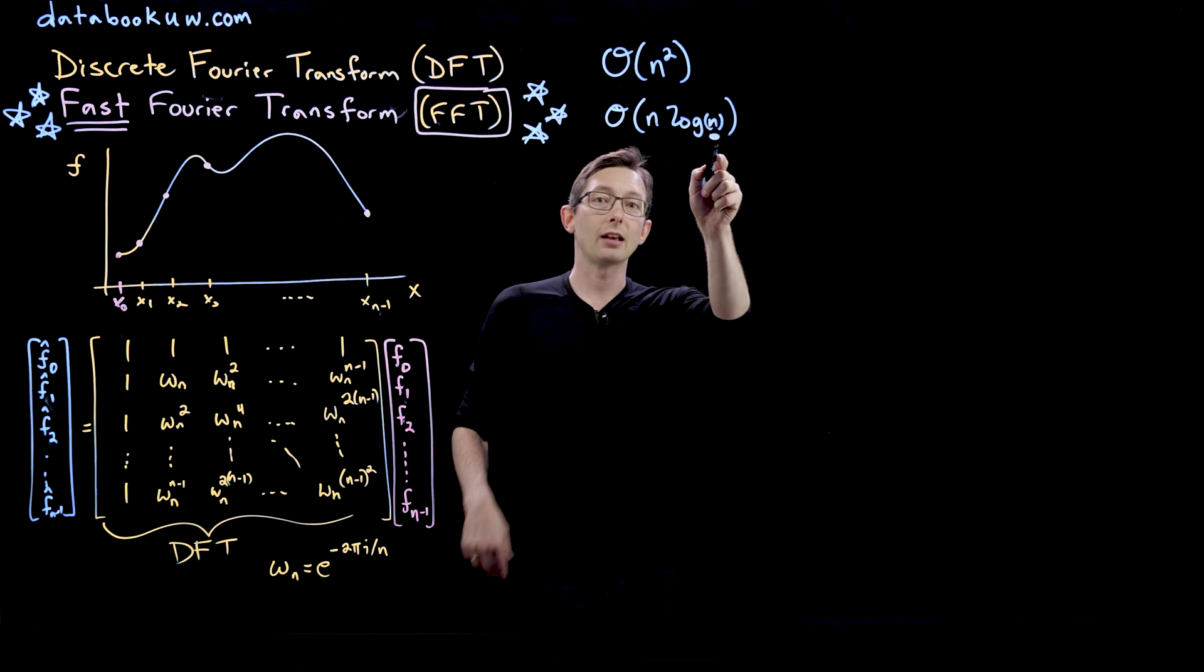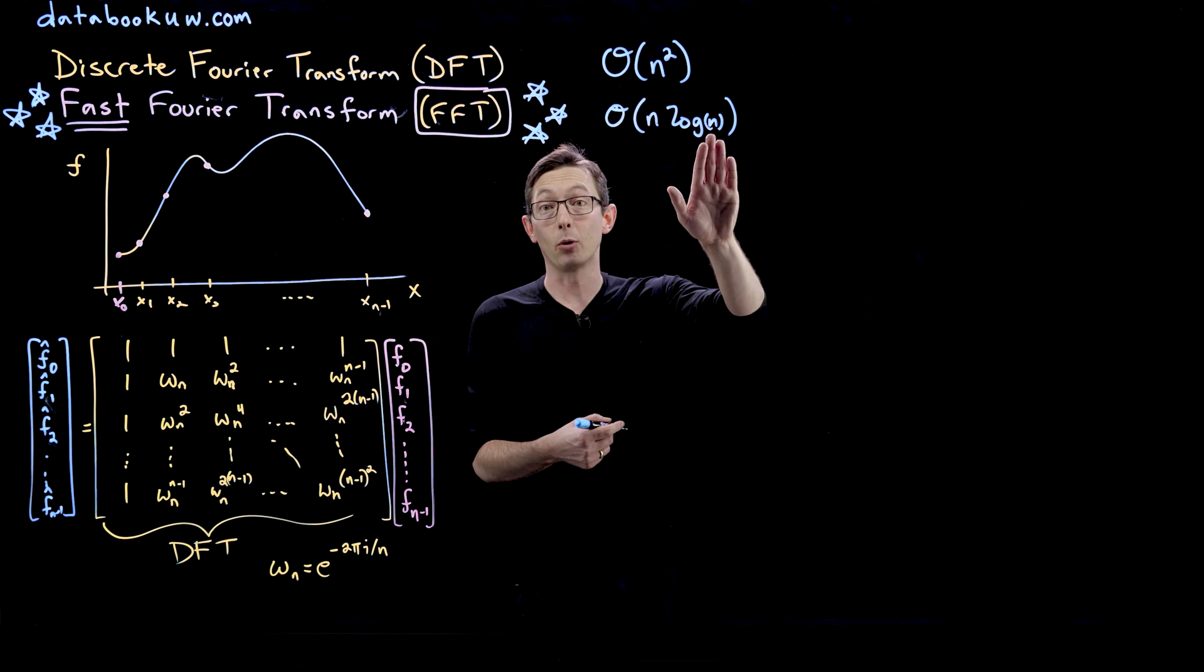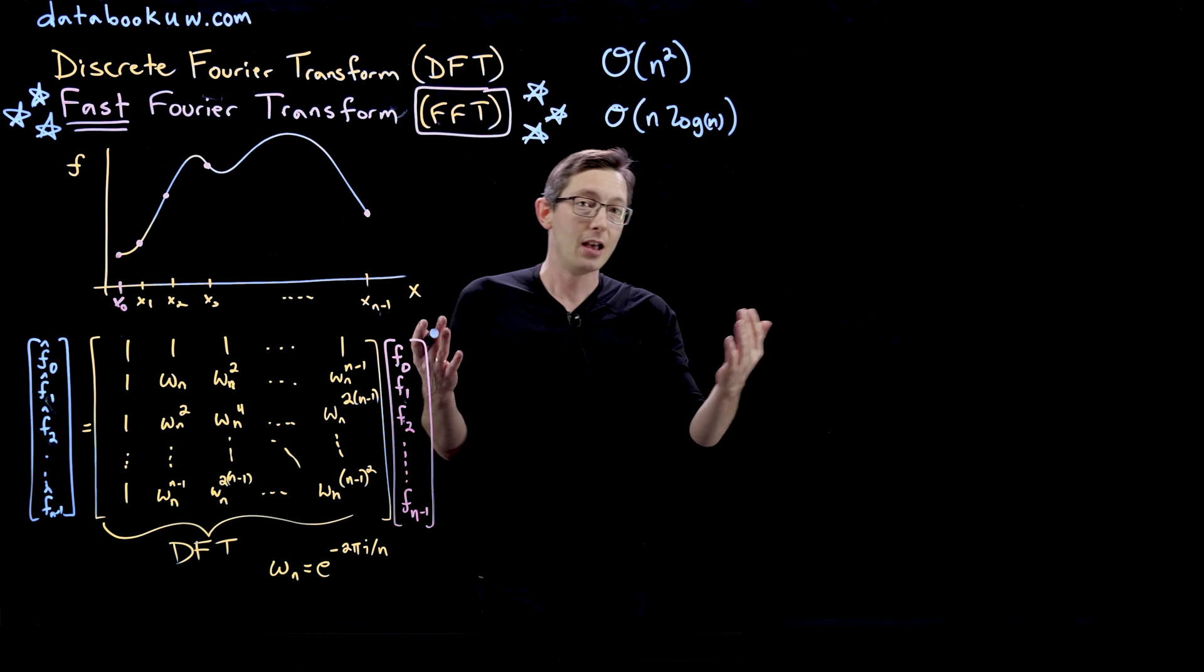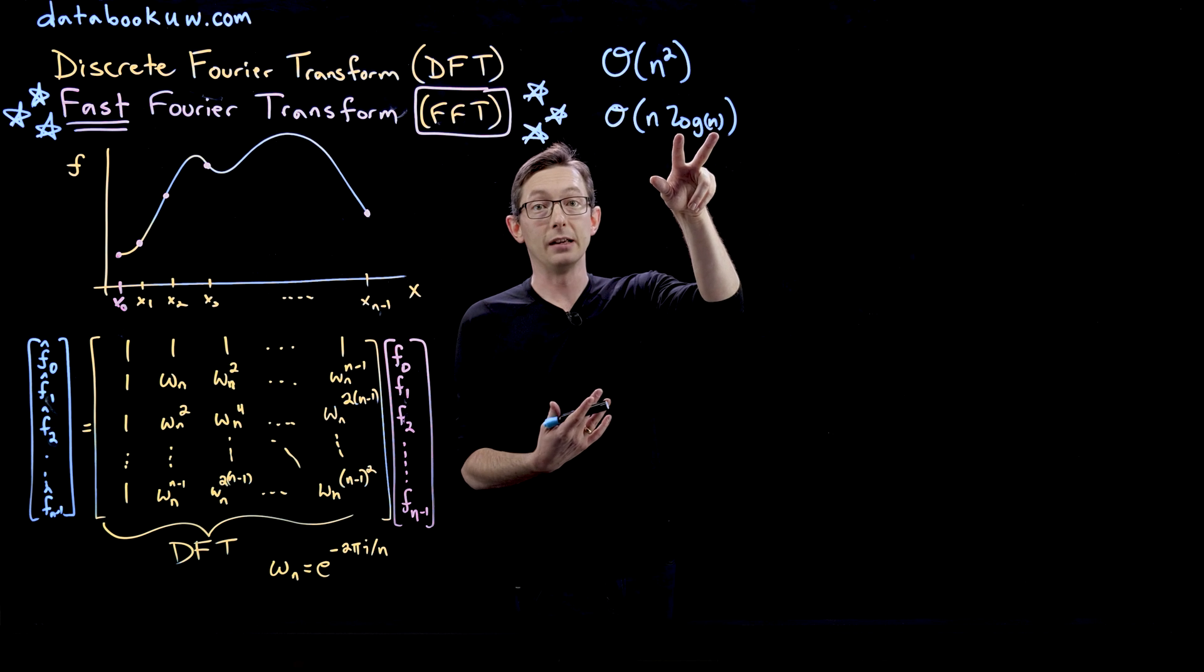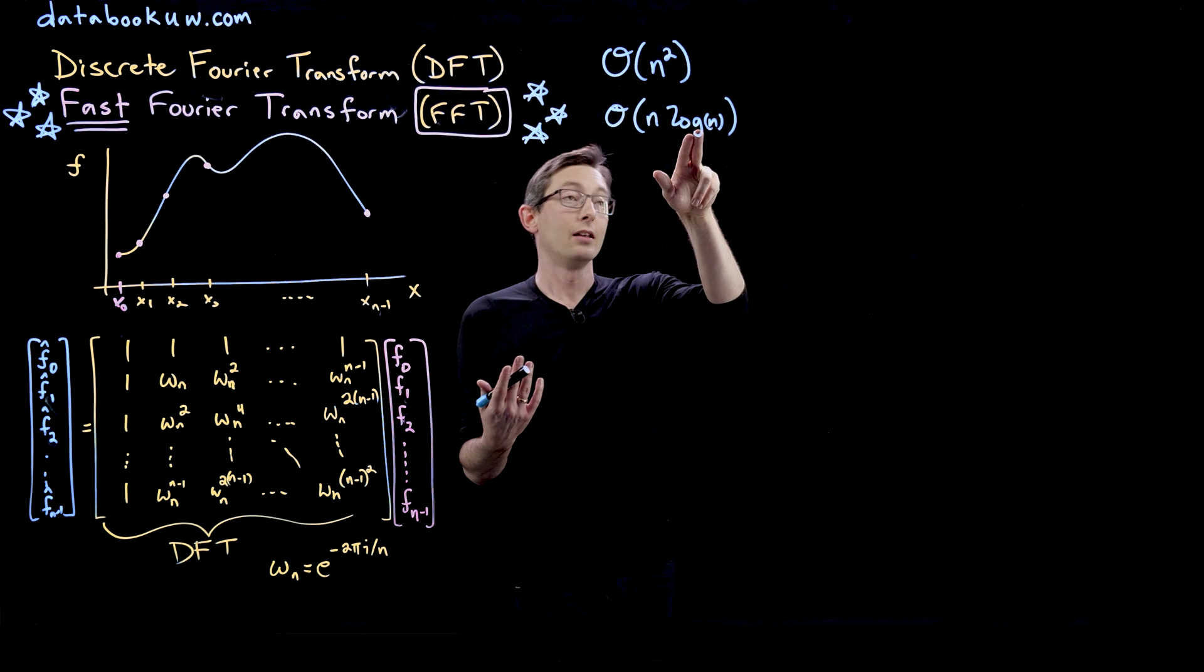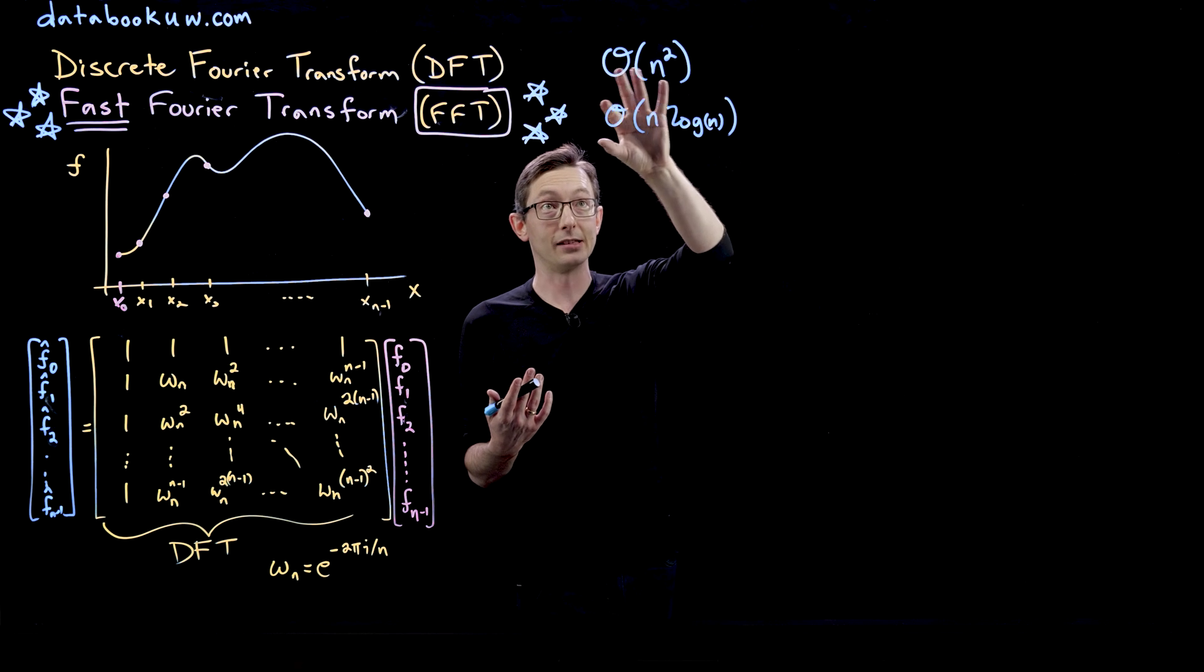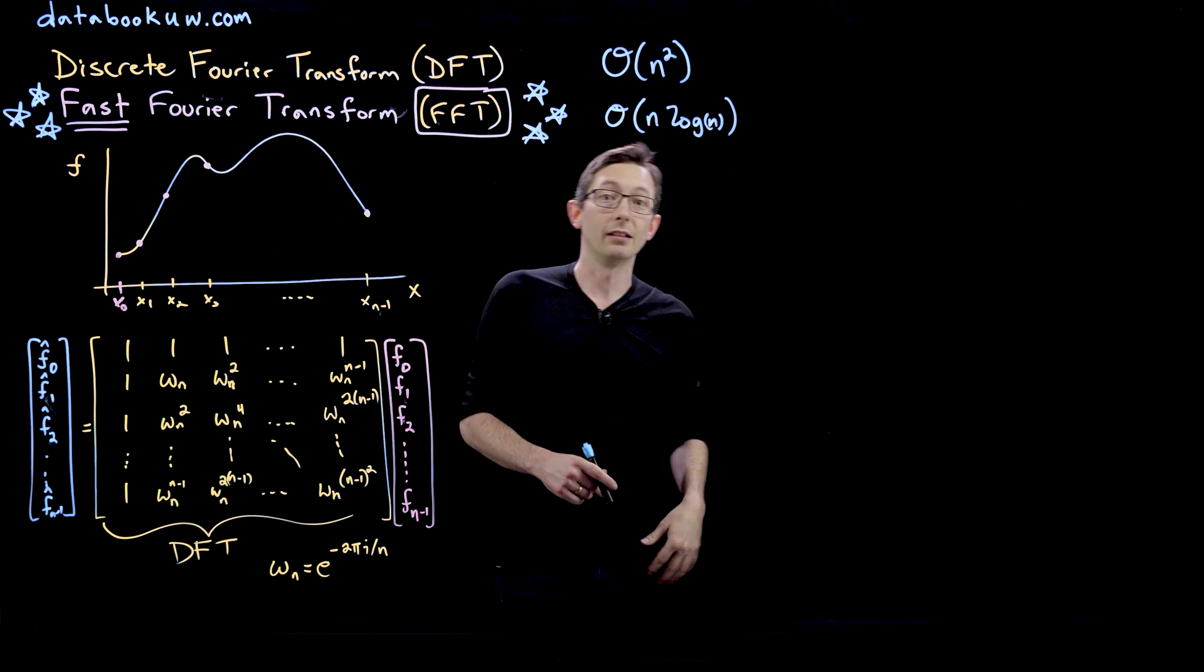What's nice is that log n becomes less and less important the bigger that n gets. If I have n as a thousand, this might be three, but when n is a billion, this is only nine. So this doesn't get that big that fast with n. So this is almost linear scaling in n,